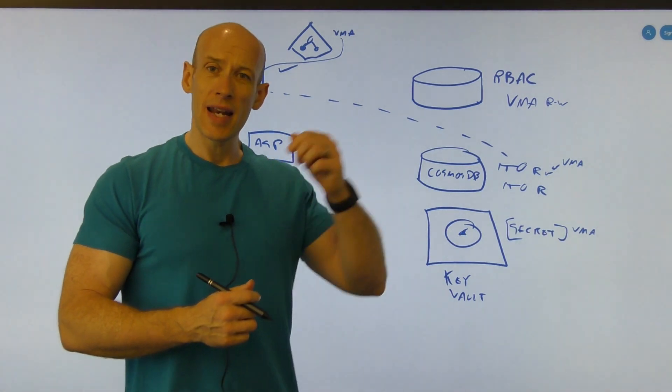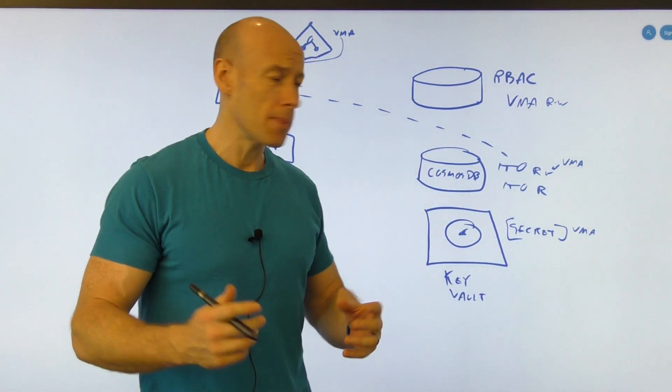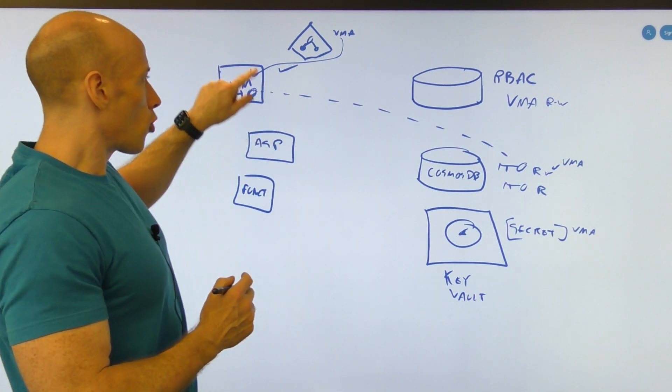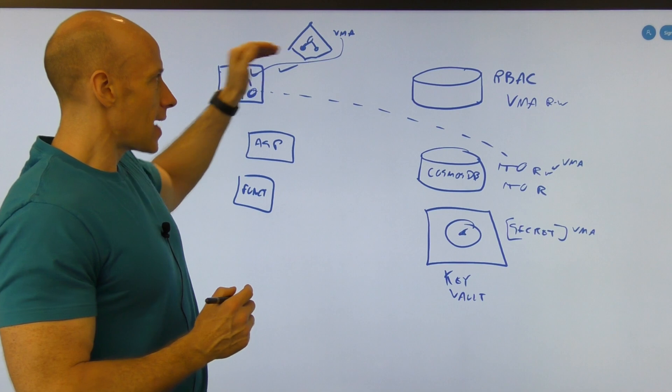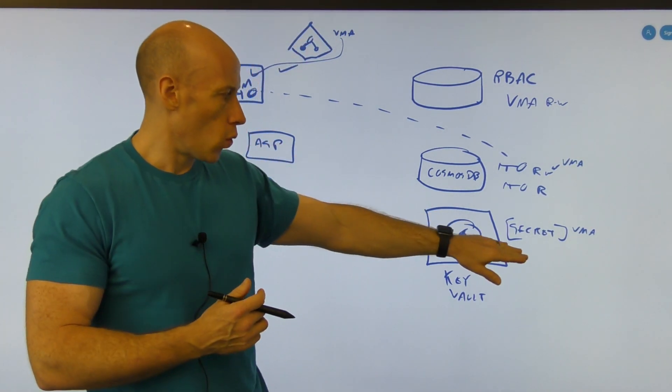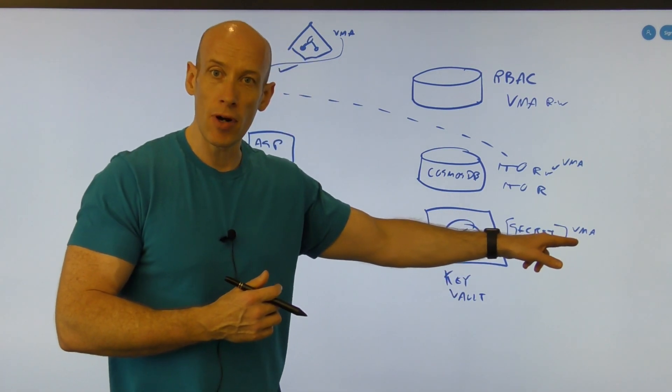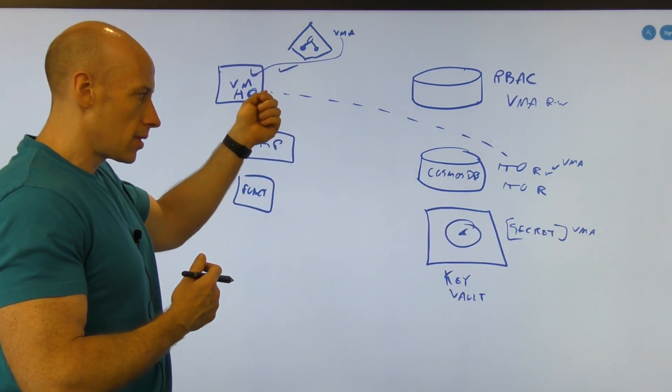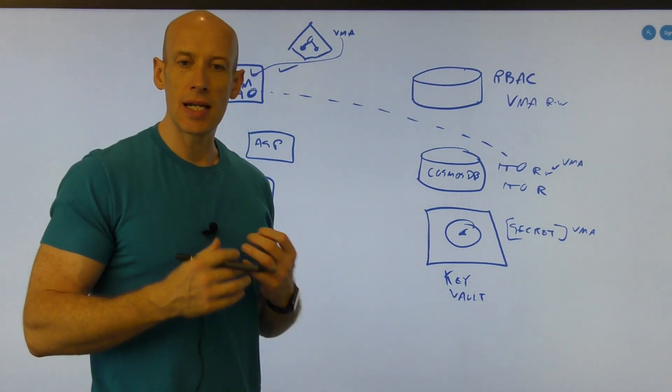So now, if I need that signature, that other password, whatever, hey, the process running in VMA can go and act as the managed identity, get that OAuth2 token, use it to authenticate itself, and then it'd be authorized to access the secret, get the secret, and then use that against whatever end service it actually needs to do.